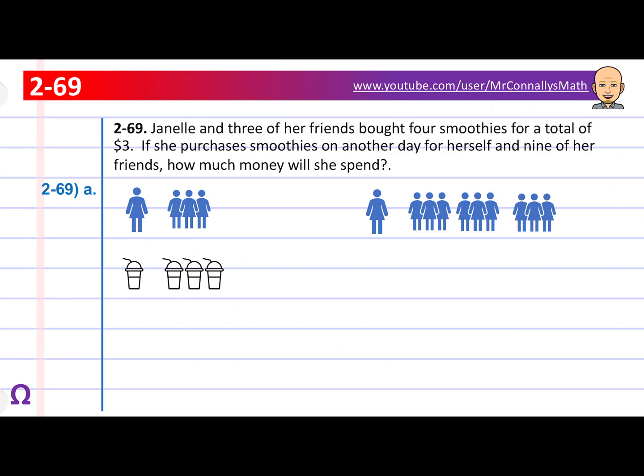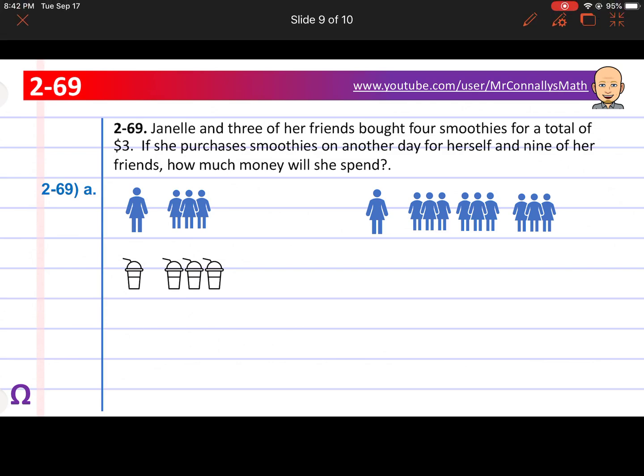Last problem, 69. Janelle and three of her friends bought four smoothies for a total of three dollars. If she purchased smoothies on another day for herself and nine of her friends, how much money will she spend? Let's help you get the information. First of all, it says Janelle and three of her friends. So that's 1 plus 3 equals 4 people. They haven't tried to trick you yet. But it did say four smoothies. So 1 plus 3 is how we got four smoothies.